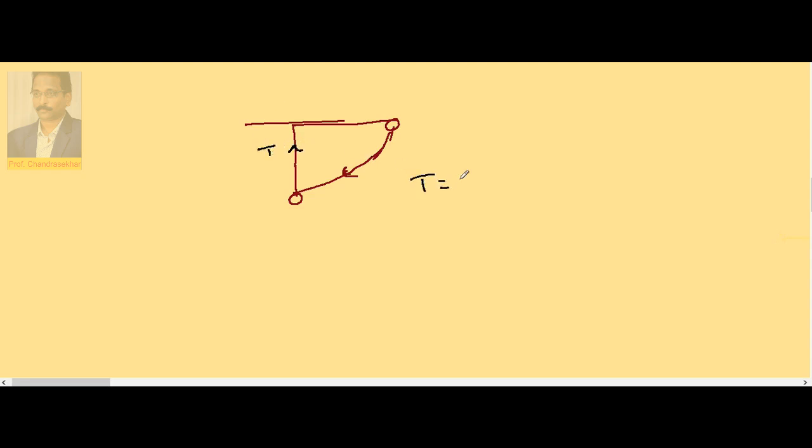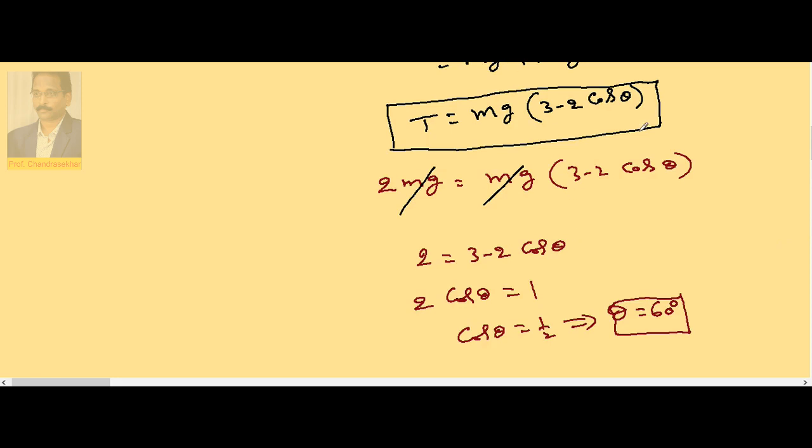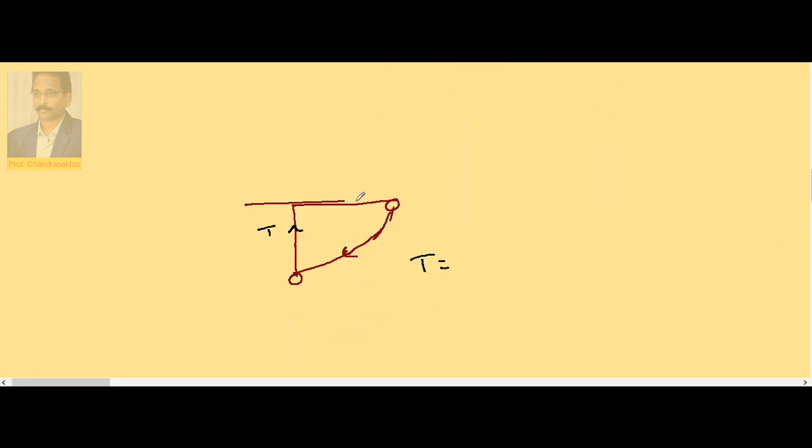So already we know T is equal to the general equation Mg into 3 minus 2 cosθ. Mg times 3 minus 2 cosθ. Now here theta is 90 degrees. So cos 90 is 0. So 3mg.